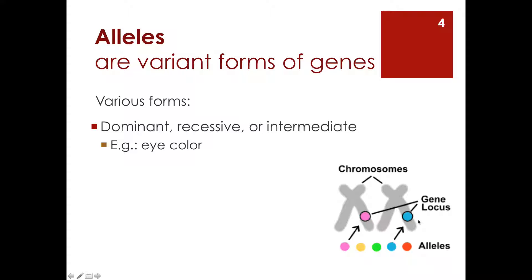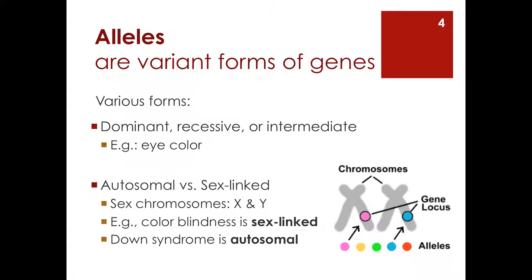Generally, an allele will be dominant over another — brown is dominant over blue in terms of eye color. So in order to get blue eyes you will have to have two recessive or non-dominant alleles in order for it to express itself. Also, in terms of autosomal or sex-linked expressions, we know that color vision deficiency, or color blindness, is associated with the X or Y chromosome. Men are about ten times more likely than women to be colorblind, most commonly being unable to tell red from green. But many or most disorders are not sex-linked — they're associated with the other chromosomes, the other 22 pairs.